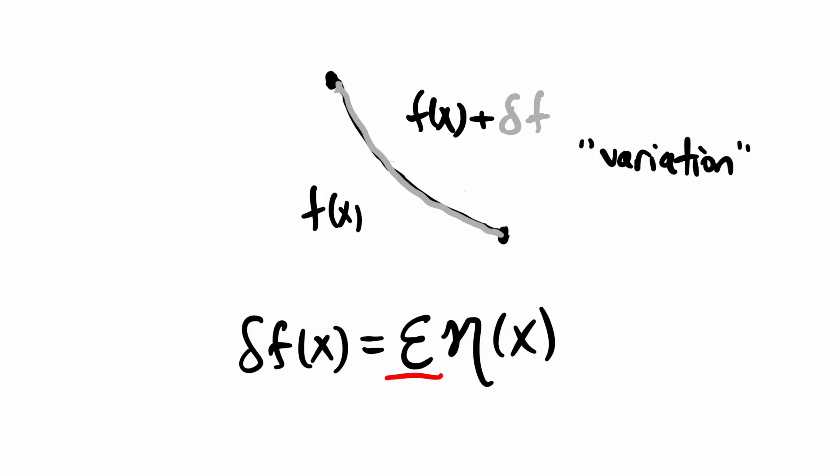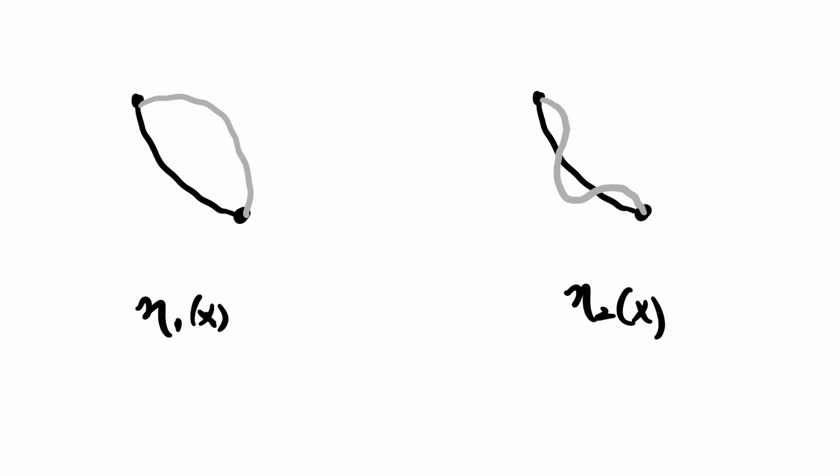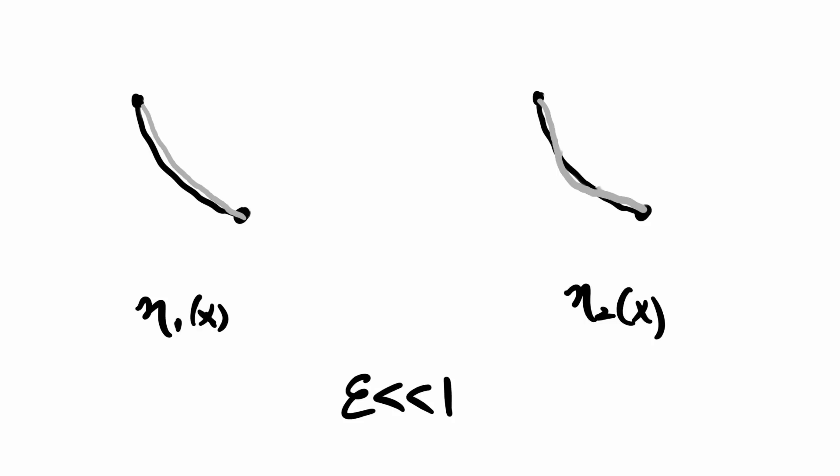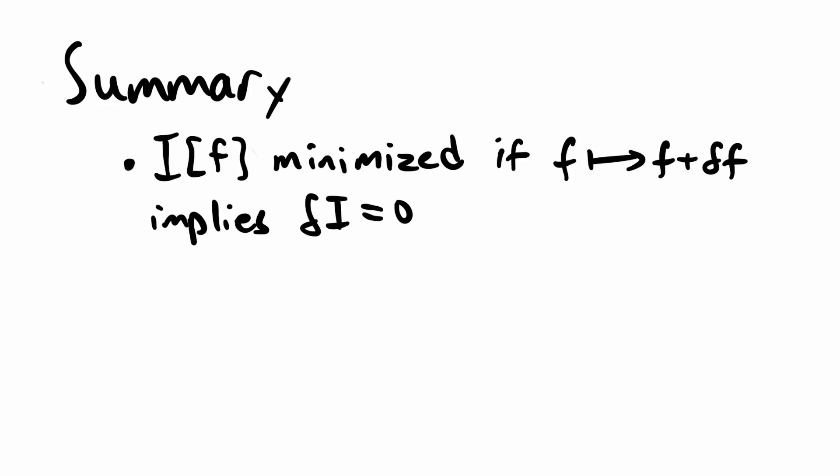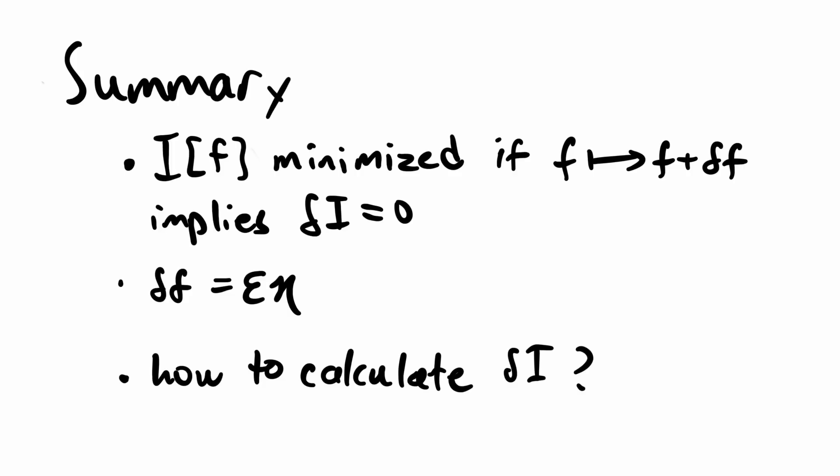There might still be a problem you are thinking of. Consider two varied functions with the same epsilon but two different etas — the first one looks more stretched than the second, even though they have the same value of epsilon. It seems like epsilon isn't a consistent measure of how stretched the function is. However, recall that we only care about what happens when we vary the input function by infinitesimal amounts, when epsilon is very very small. In this case, all the stretched functions will look very close to the original function no matter what eta is. To sum up, a functional is minimized by a function if varying the function by an infinitesimal amount does not change the value of the functional — the variation of the functional is zero. We also figured out how to define the variation in a way that lets us talk about small versus large variations.